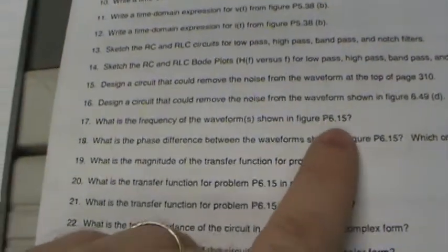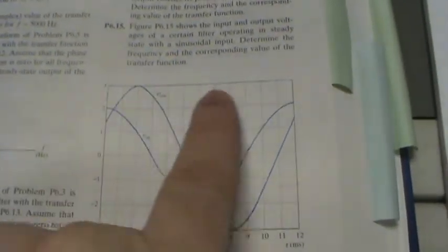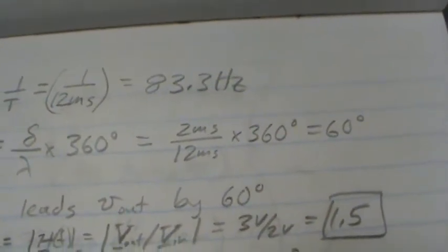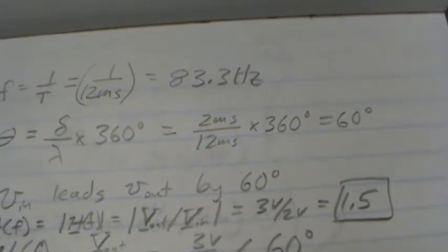On number 17, it asks what is the frequency of the waveform shown in problem 6.15. You look at the period of the waveform and find that 1 over the period equals the frequency. So 1 over 12 milliseconds is about 83.3 hertz.